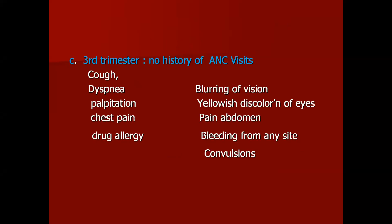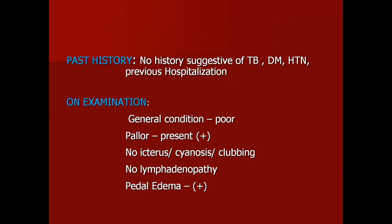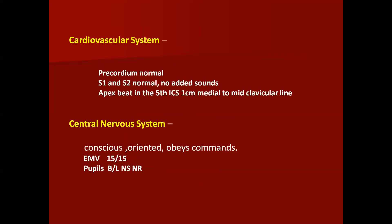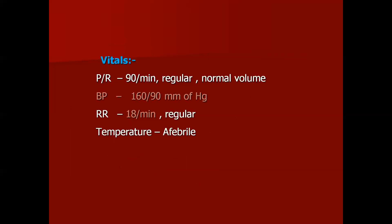There is no history of chronic symptoms or signs of preeclampsia or any hypertensive disorder, and no suggestive history of any chronic disease. On examination, the patient had a poor general condition with pallor and pedal edema, but no icterus, cyanosis, or lymphadenopathy. Per abdominal examination revealed a uterus of 28 to 32 weeks size, fetal heart sounds present, and fetal movements reported by the patient. Respiratory and cardiovascular system examinations were within normal limits. CNS examination: patient was conscious, oriented, obeying commands, with GCS 15/15. Vitals: pulse rate 90 per minute, blood pressure 160/90 mmHg, respiratory rate 18 per minute.